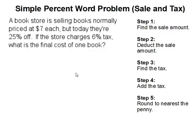Simple percent word problems: sale and tax. In this one, we are going to solve a word problem that involves both sale and tax. A bookstore is selling books normally priced at $7 each, but today they are 25% off. If the store charges 6% tax, what is the final cost of one book?